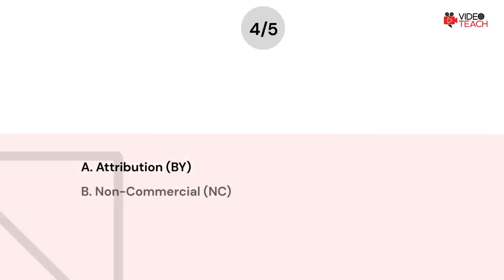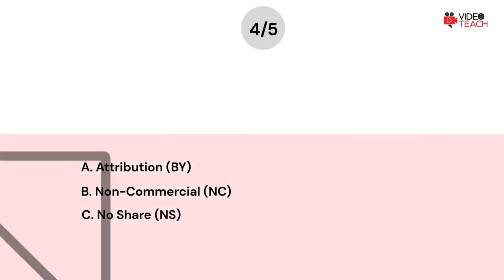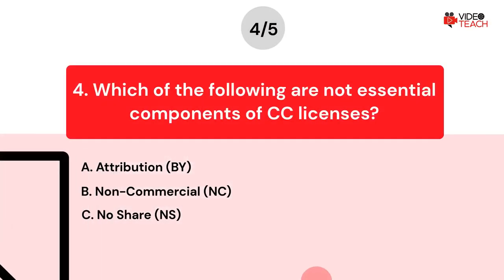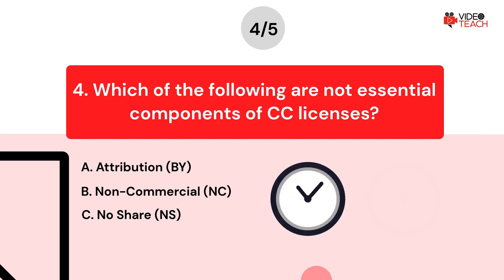Question number four. Which of the following are not essential components of CC licenses? Option A: Attribution BY. Option B: Non-Commercial NC. Option C: No Share NS. Now you have about 15 seconds to think about your answer.